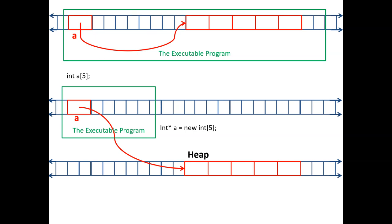With dynamic memory allocation, the array is not built until the program is running. At the beginning of the program you can ask the user how many numbers they have — user tells you 52, you allocate 52. When the new statement is executed, it requests the operating system for that many entities. Because it's object-oriented, when you say five integers, the compiler knows an integer is four or eight bytes and allocates exactly that amount. Five default constructors will be called, and the address of the beginning is passed into your pointer — you have your array.